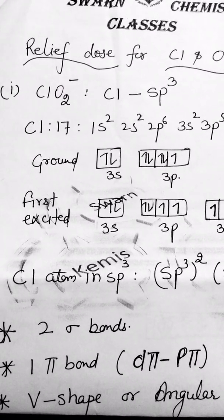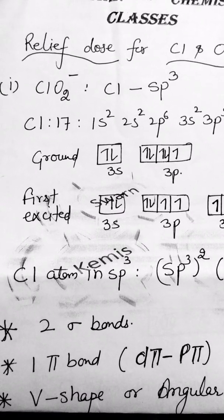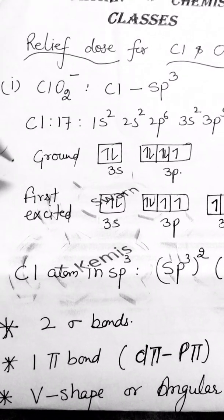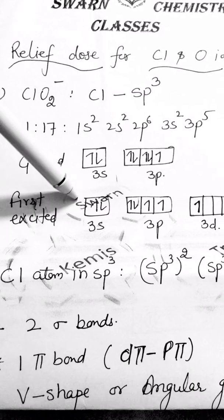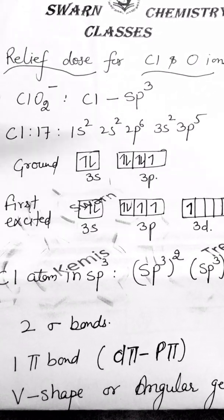The ground state electronic configuration of chlorine will be 3s2 3p5. The first excited state will be 3s2 3p4 and 3d1.